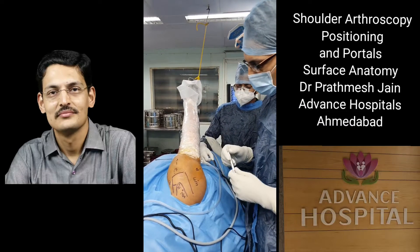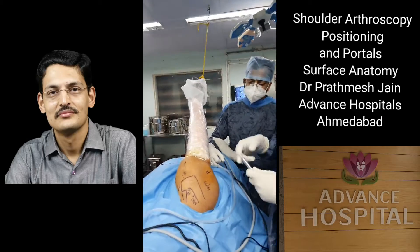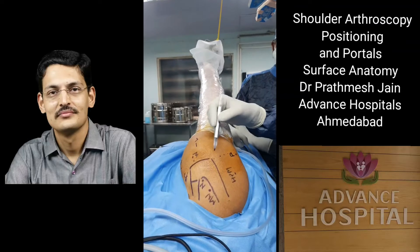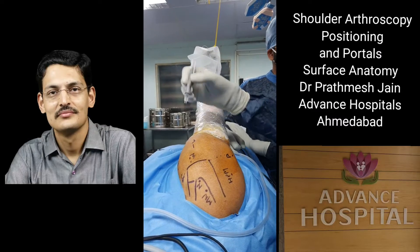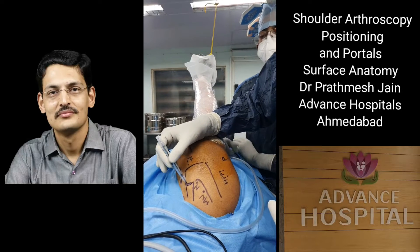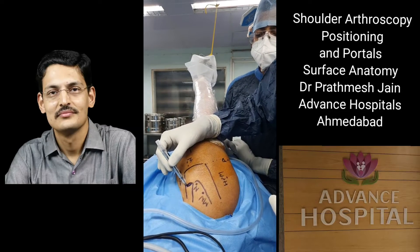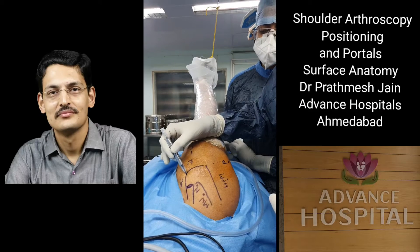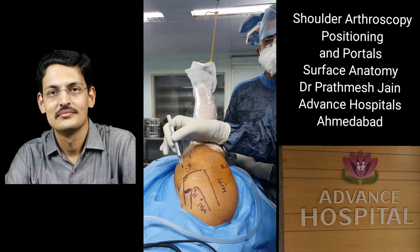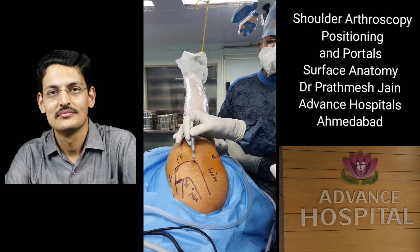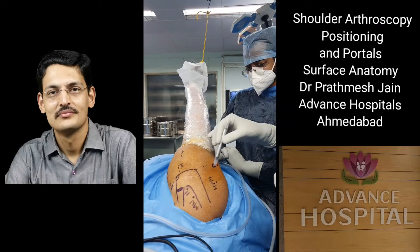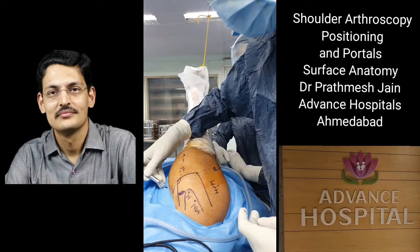The standard posterior portal is about 4 to 5 cm down and lateral to the anterolateral edge of the acromion. Key surface landmarks include the clavicle, the lateral end of the clavicle and AC joint, and the anterolateral edge of the acromion, which forms the impingement point. A bony spur here will cause impingement. The posterolateral edge of the acromion gives you the markings for your posterior portal, and anteriorly you can feel the coracoid.